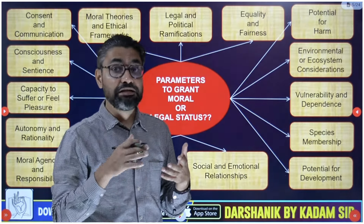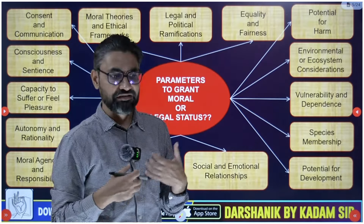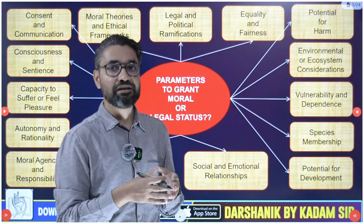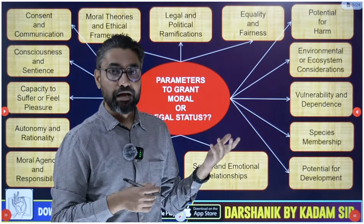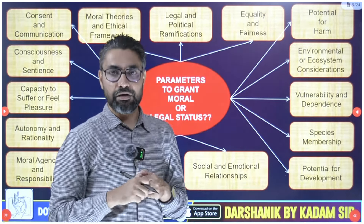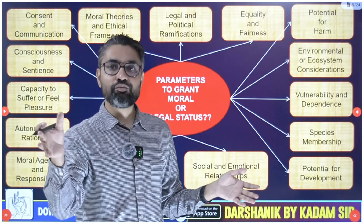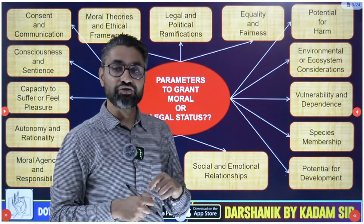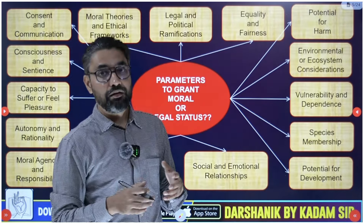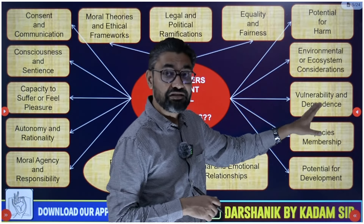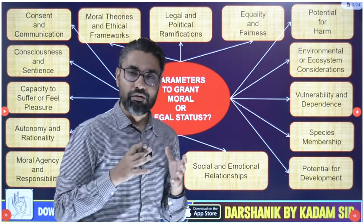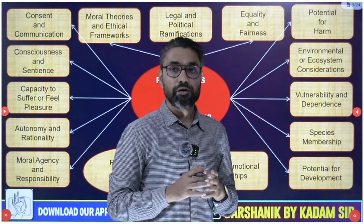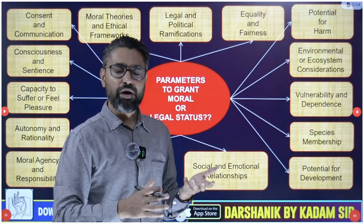The ninth parameter is vulnerability and dependence - how vulnerable or dependent is that entity on us? Children are fully dependent on their parents, so parents have greater moral responsibility toward them. Similarly, fetuses are vulnerable and dependent. A fetus cannot come to court and say its rights are being violated; a person in a vegetative state cannot either. For these vulnerable and dependent sections, we need to establish criteria to protect their moral and legal status.